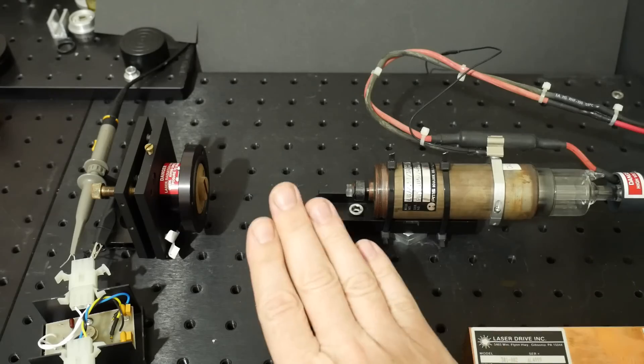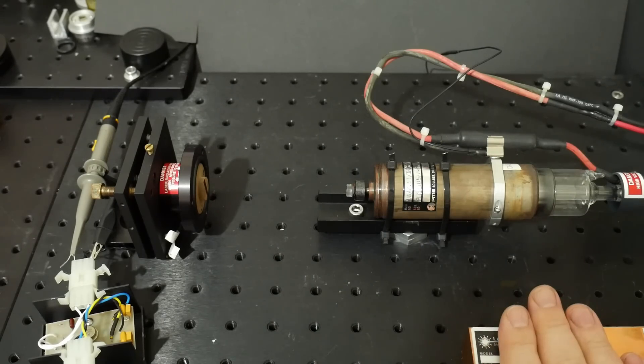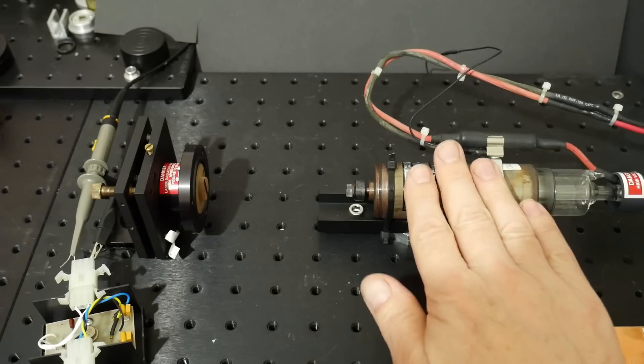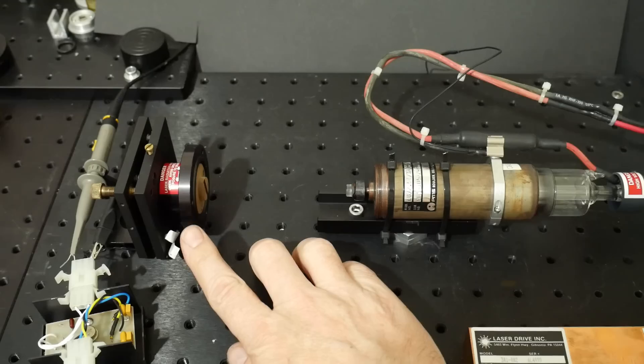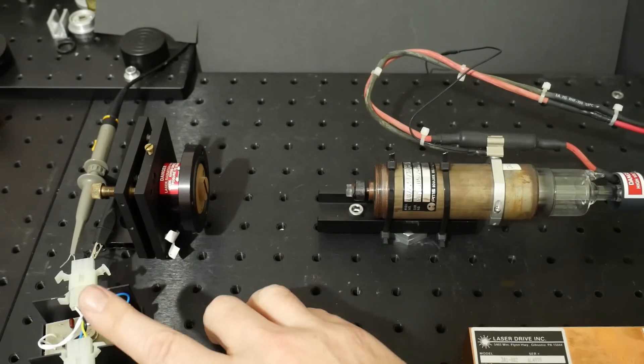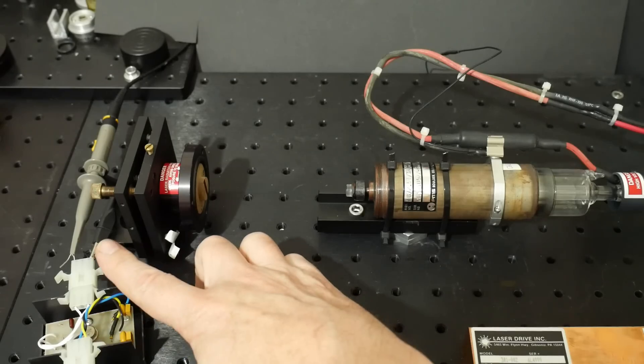I'll just walk you through this setup real quick. I've got the high voltage power supply for the laser mounted here. I have the laser tube itself mounted on a sled, and then I have the piezoelectric driven mirror mounted in a mirror mount.